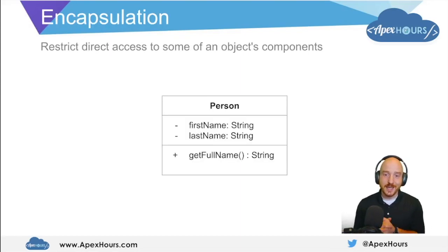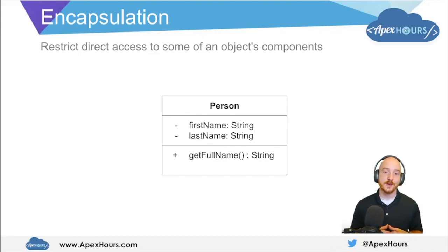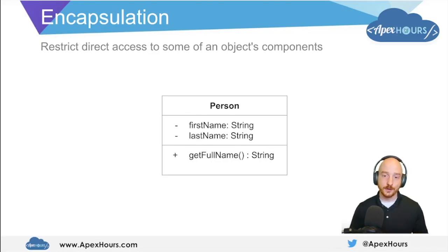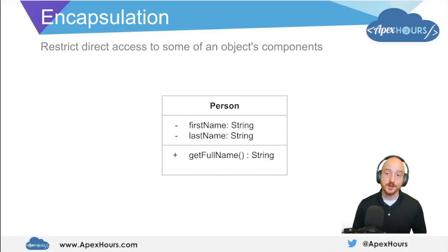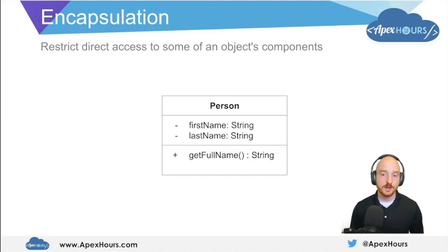Finally, we have encapsulation. Encapsulation is used so we can restrict access to some of an object's components from the outside world. In this example, we have the person class with two private instance variables called first name and last name, but it has a public method called get full name which returns a string. In this scenario, the only thing we know is that the person has a full name. We don't have the ability to modify first name or last name, but a different object within our program's runtime could call person.getFullName and retrieve the full name, without having access to modify first name or last name.